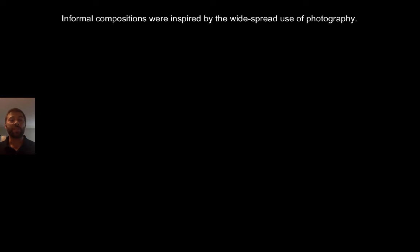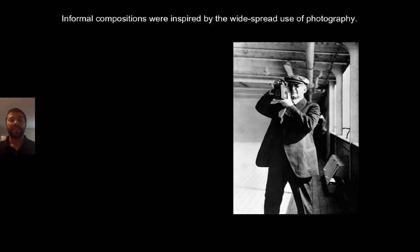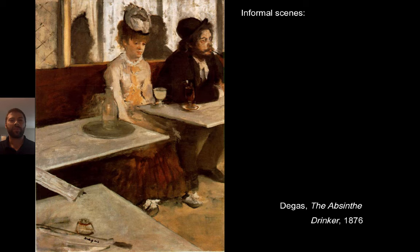In the informal compositions of the impressionists, another point: they were also inspired by the use of photography. The impressionists saw people making use of cameras — going outside, setting up the camera, and taking a picture. And they said: they can just sit there and take a picture of what they're seeing. So why can't I just go out and paint something I immediately see? Here we see an impressionist painter — Degas — giving this kind of informal scene, just painting some people sitting in a bar.